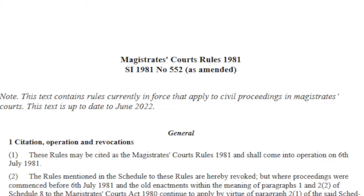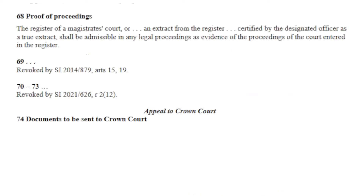If we look at the Magistrate Court Rules, section 68 — proof of proceedings — the register of the magistrate's court or an extract from the register certified by the designated officer as a true extract shall be admissible in any legal proceedings as evidence of the proceedings of the court entered into the register. Most times if you ask for that registry copy, it doesn't exist. Therefore you have a right to demand it on your hearing date if you go into an appeal. And if they can't produce it, you've got proof of fraud on the court, which is a criminal offense.